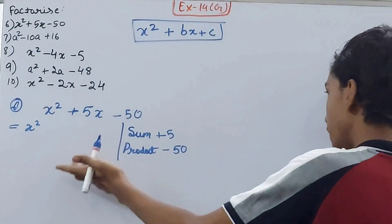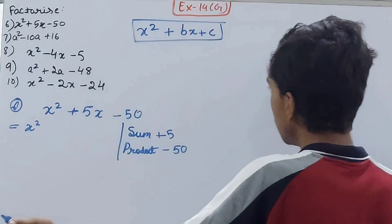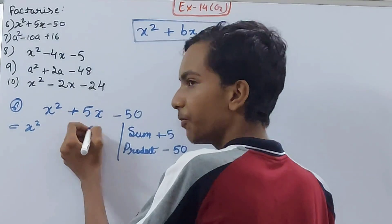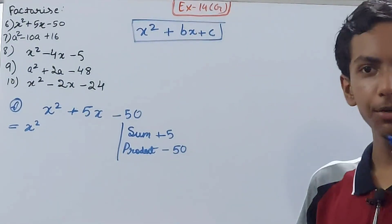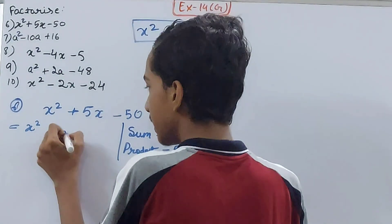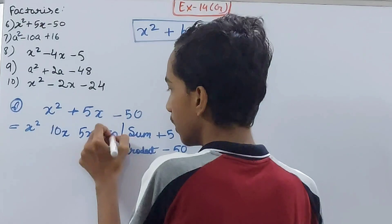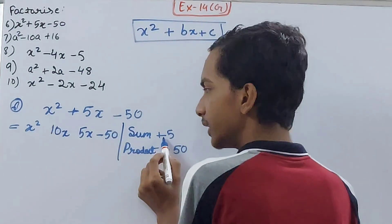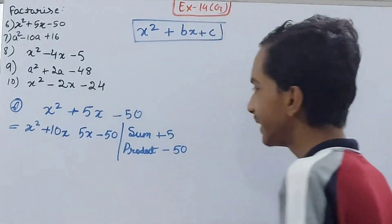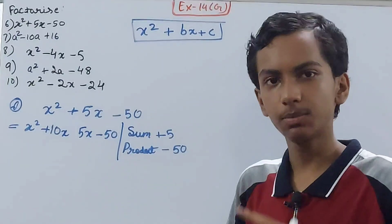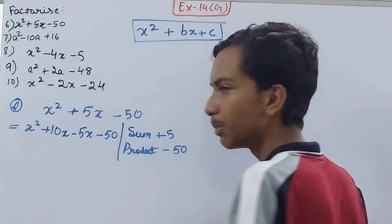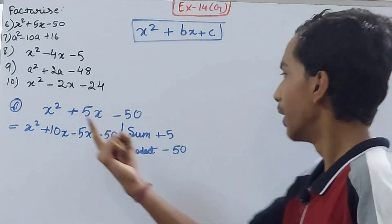The options are: 1 and 50 — not possible; 2 and 25 — not possible; 5 and 10 are the only options. We can do 10 minus 5, that gives plus 5, and 10 into minus 5 gives minus 50. Since the sum is positive, the greater quantity will be plus, so 10 is plus. The product is negative, so the smaller quantity is minus — minus 5.